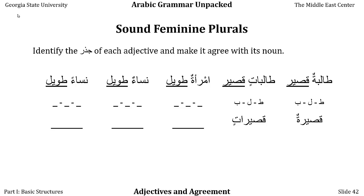The word for woman is imra'a, a very strange and irregular word. Imra'atun — a woman — is in the nominative case. Let's make her tall with tawil. Its jidhr is ta'-waw-lam, and it has the same wazn as qasir. Because imra'a represents a feminine singular person, we add ta' marbuta: imra'atun tawilatun, a tall woman. But the plural of imra'a has nothing to do with imra'a — it's nisa', from the word for humans. So nisa'un, some women.